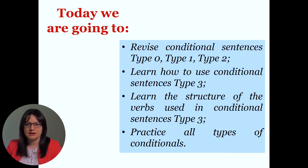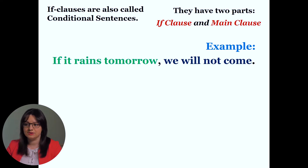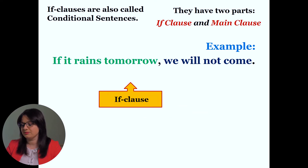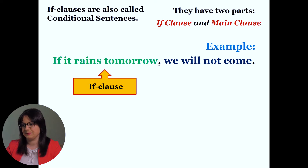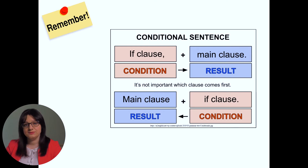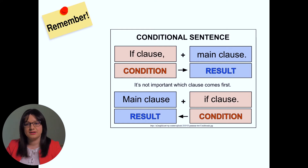If clauses are also called conditional sentences. They have two parts: the if clause and the main clause. For example: 'If it rains tomorrow' is the IF clause, and 'we will not come' is the main clause. You have to remember: the if clause is the condition and the main clause is the result. The order of the clauses is flexible — it does not matter which comes first.